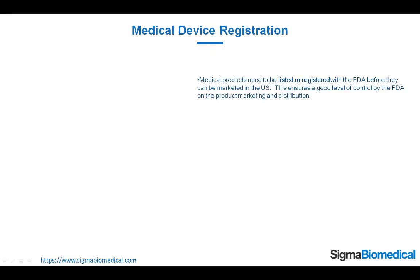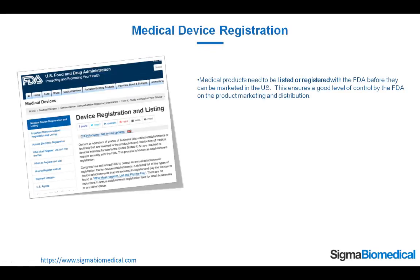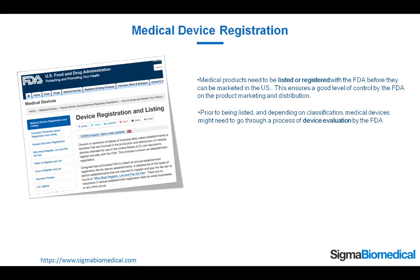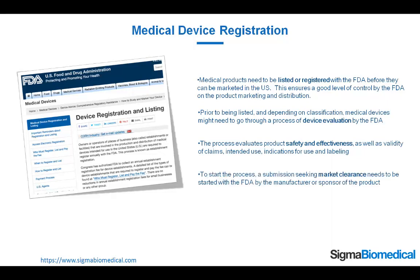Medical Device Registration. Medical products need to be listed or registered with the FDA before they can be marketed in the US. This ensures a good level of control by the FDA on the product marketing and distribution. Prior to being listed, and depending on classification, medical devices might need to go through a process of device evaluation by the FDA. The process evaluates product safety and effectiveness, as well as validity of claims, intended use, indications for use, and labeling. To start the process, a submission seeking market clearance needs to be started with the FDA by the manufacturer or sponsor of the product.